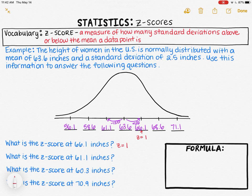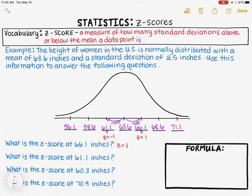The next question asks: what is the z-score at 61.1 inches? This is a great example of a negative z-score, because we've already labeled 61.1 as one tick mark to the left, or below, the mean. Since we're exactly one standard deviation below the mean, our z-score is negative one. So the z-score at 61.1 inches is negative one.